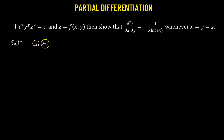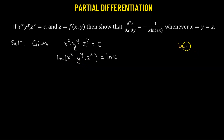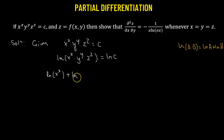We are given that x^x times y^y times z^z equals c. We take the natural logarithm on both sides to get log(x^x · y^y · z^z) = log(c). Breaking down the left-hand side using the logarithm property log(a·b) = log(a) + log(b), we get log(x^x) + log(y^y) + log(z^z) = log(c).